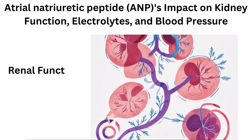Renal Function: ANP acts on the kidneys to increase the glomerular filtration rate, GFR, which is the rate at which blood is filtered by the kidneys. This leads to an increase in urine production, or diuresis. It promotes the dilation of the afferent arterioles and constriction of the efferent arterioles in the renal circulation, which enhances blood flow to the glomerulus and increases the filtration of blood.